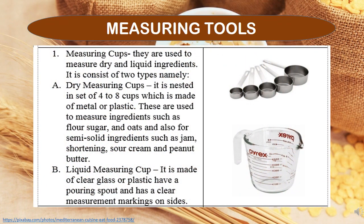Measuring Tools: First are measuring cups, used to measure dry and liquid ingredients. There are two types: dry measuring cups and liquid measuring cups. A dry measuring cup is nested in a set of 4 to 8 cups, made of metal or plastic. These are used to measure ingredients such as flour, sugar, and oats, and also semi-liquid ingredients such as jam, shortening, sour cream, and peanut butter.